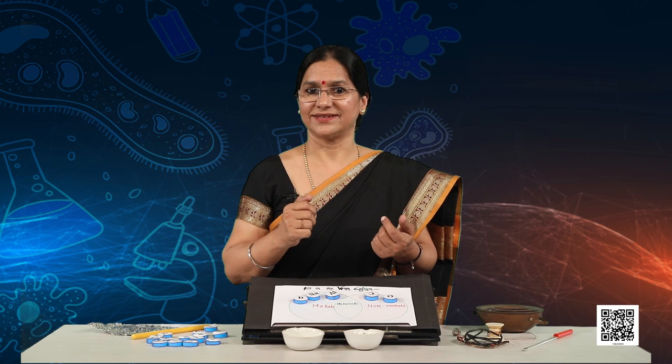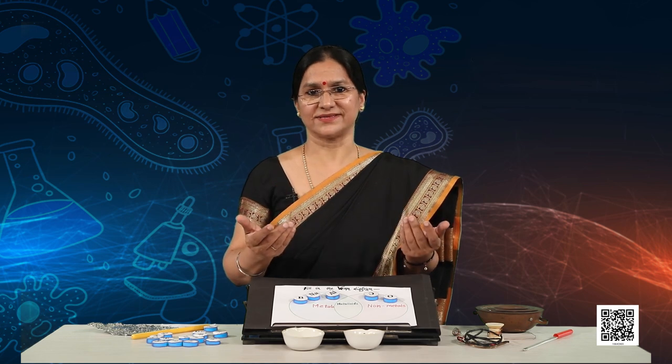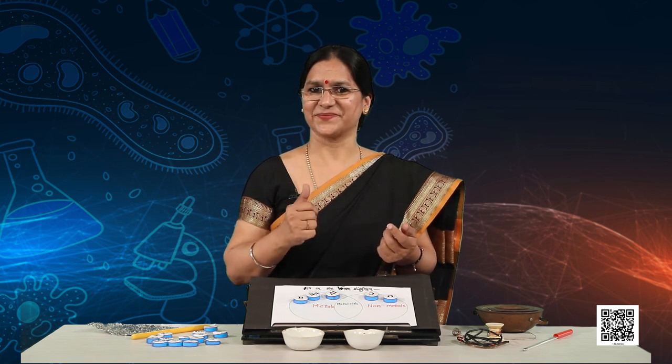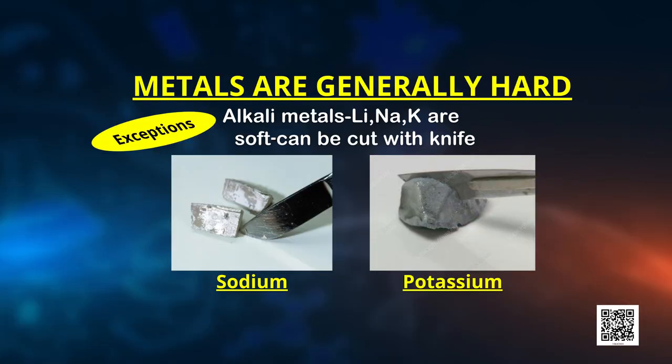Another physical property of metals is hardness. But are all metals hard? There are some alkali metals which are so soft that they can be easily cut with a knife — can you name them? Lithium, sodium, and potassium. Also remember, they have low densities and low melting points as well.